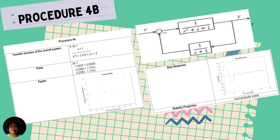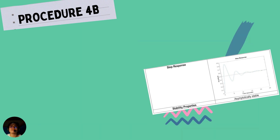For procedure 4b, given a negative feedback loop, applying its formula to MATLAB, we have our poles, PZ plot, and step response impulse presenting an asymptotically stable system, since the impulse shows an evident decreasing wave.